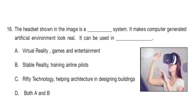Question 16. The headset shown in the image is a dash system. It makes computer-generated artificial environment look real. It can be used in dash. The answer is option A: Virtual Reality — Games and Entertainment.